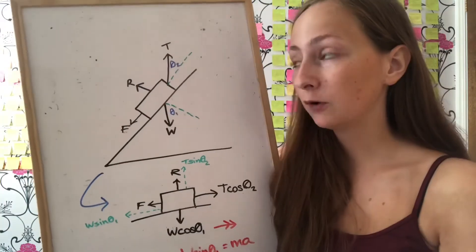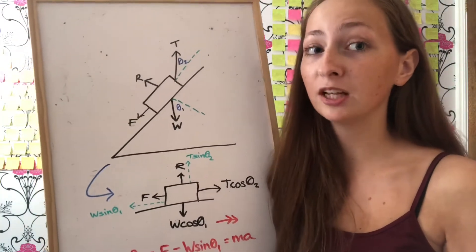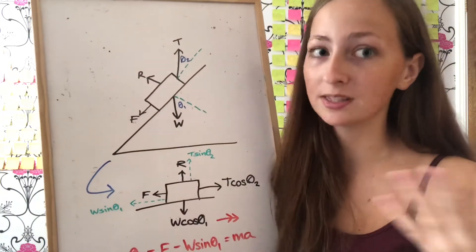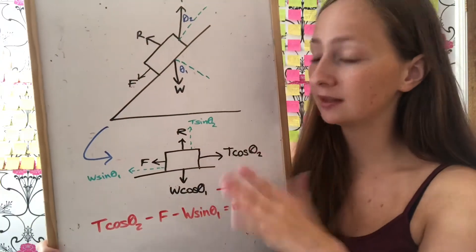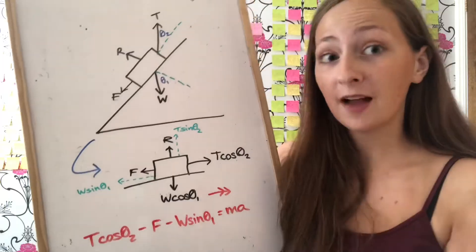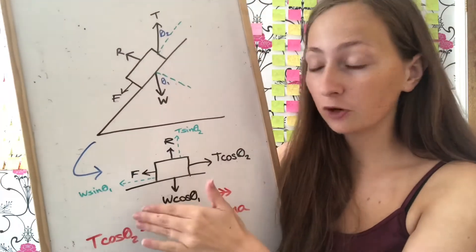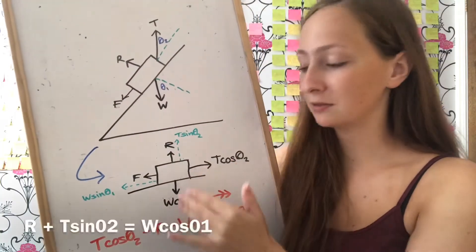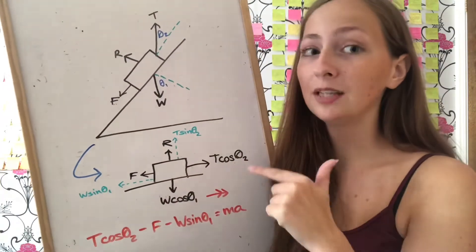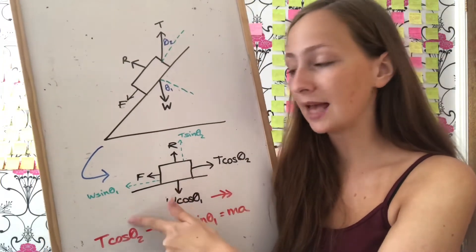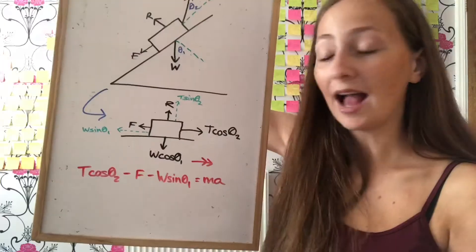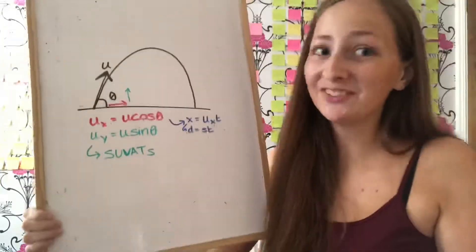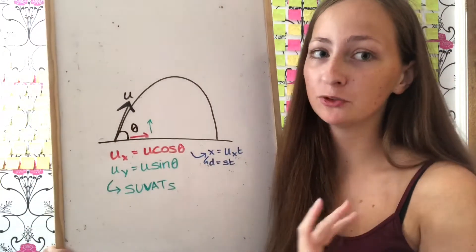Forces that are not perfectly parallel or perpendicular to the slope must be resolved using trigonometry — cosine and sine — to find all force components. Once resolved, you plug them into the formula. Because the object is not being lifted off the ground, the upward forces equal the downward forces, allowing you to find R. You can then use R in the friction formula (F = μR) to find whatever else you need. Going down the slope, it's the right-side forces subtracted from the left.